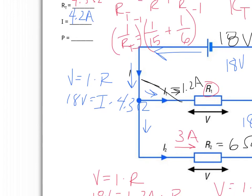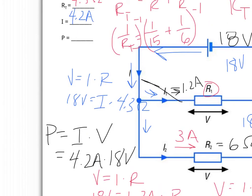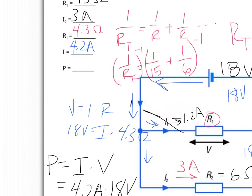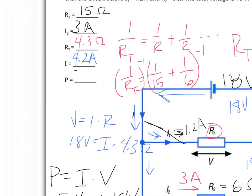That just leaves a calculation of power. Using the simplest power equation, P equals I times V: the current is 4.2 amps and the voltage is 18 volts, so our power is 4.2 times 18, which equals 75.3 watts. Thank you for joining us.